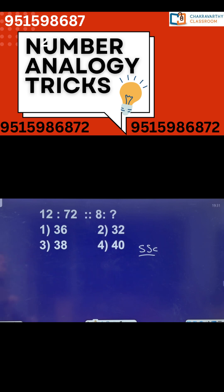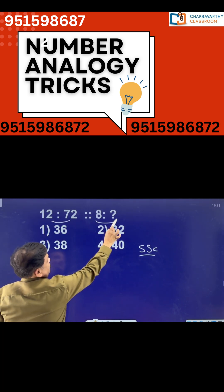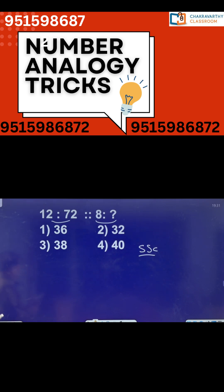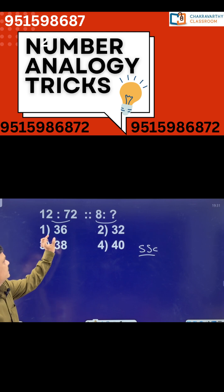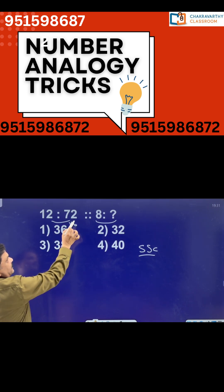Just quickly do this one. What they have given: 12 is to 72, in the same way 8 is to what? Generally while attempting this type of questions, first you start with simple logic. 72, yes 72 is multiple of 12. 12 into how many times I get 72? 12 into 6 times, isn't it?